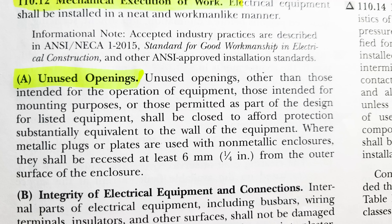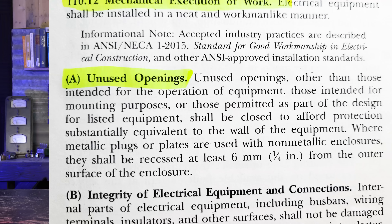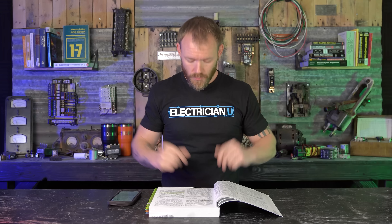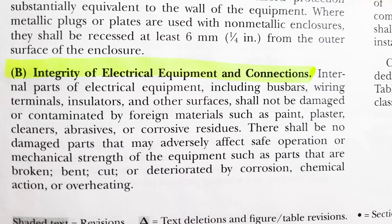The code also defines that the service is not the meter — the service is the main disconnect, the first disconnecting means of a premises wiring system. So from that first disconnecting means, going to another panel and going to a main breaker inside of that panel — that whole thing is a feeder. It's feeding something; it's not entering the service.